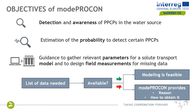After the estimation of the probability to detect a certain PPCP, which is based only on the chemical characteristics of the contaminant, we provide guidance to gather relevant parameters in order to develop a solid transport model. Therefore, we move from a general context to a specific condition for the case study in order to design field measurements to collect the missing data. We provide to the interested stakeholder suggestions on how to collect the missing information in order to be able to predict the possible occurrence of PPCPs in their system.